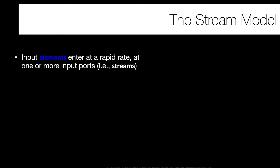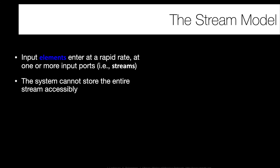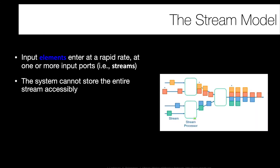Instead, we have to create a new model called the stream model. We deal with this by assuming that elements enter our stream through one or more ports at a rapid rate, and the stream is so large that we can't store it reasonably. We have to do some processing on the stream to reduce its size, maintain summary statistics, do some sampling, or extract insights quickly rather than storing the entire stream over time.